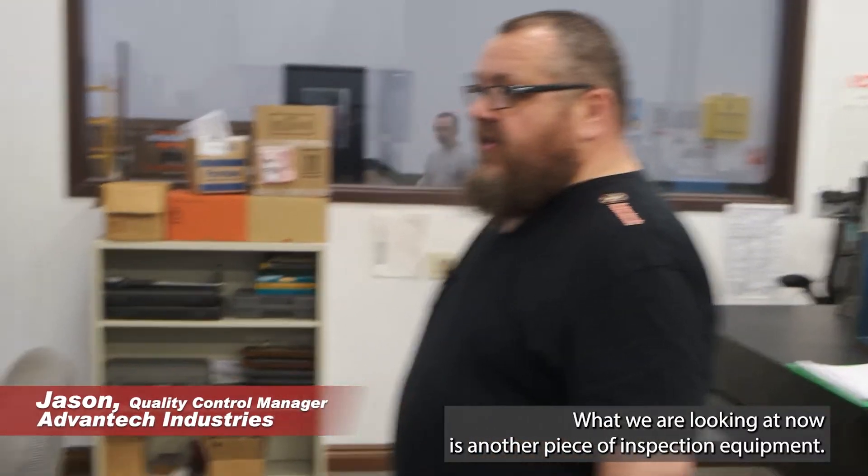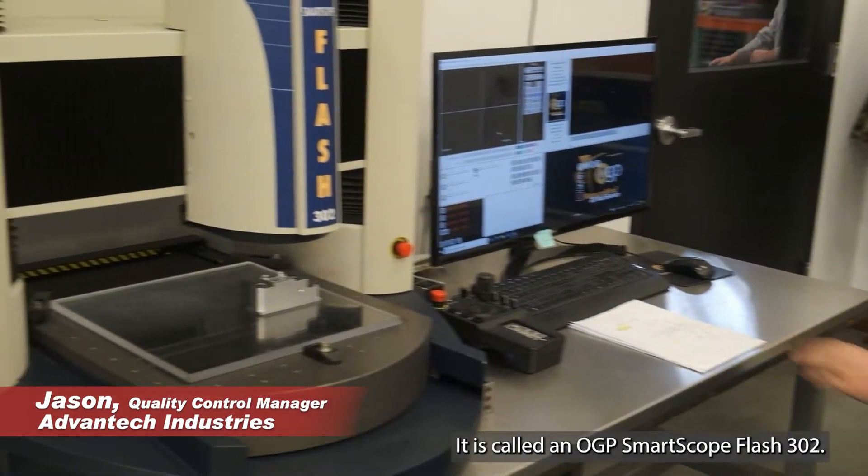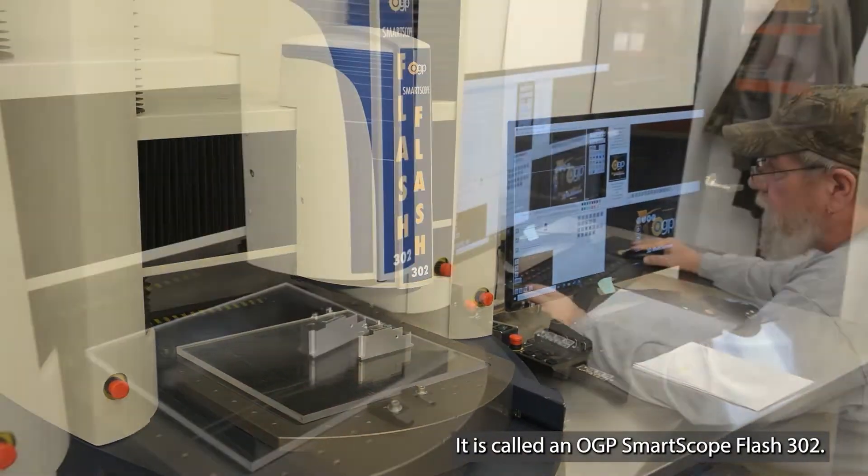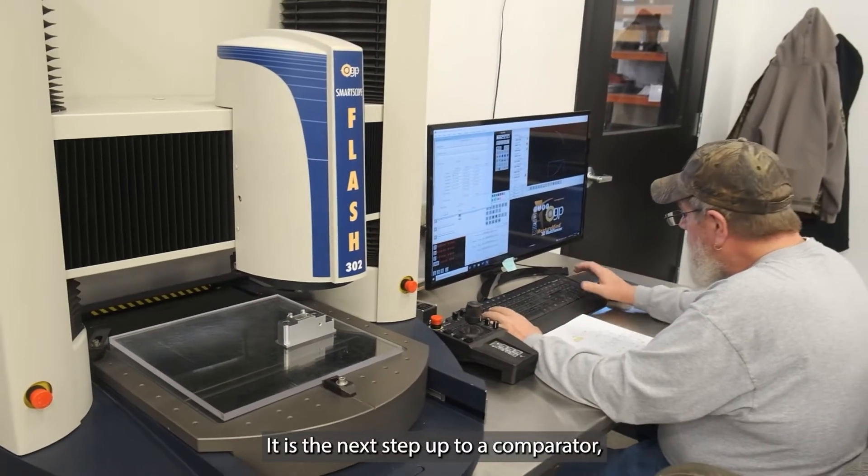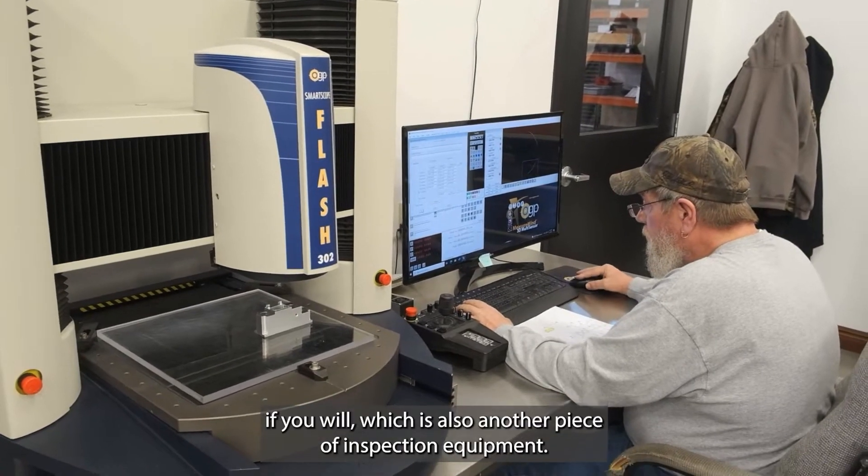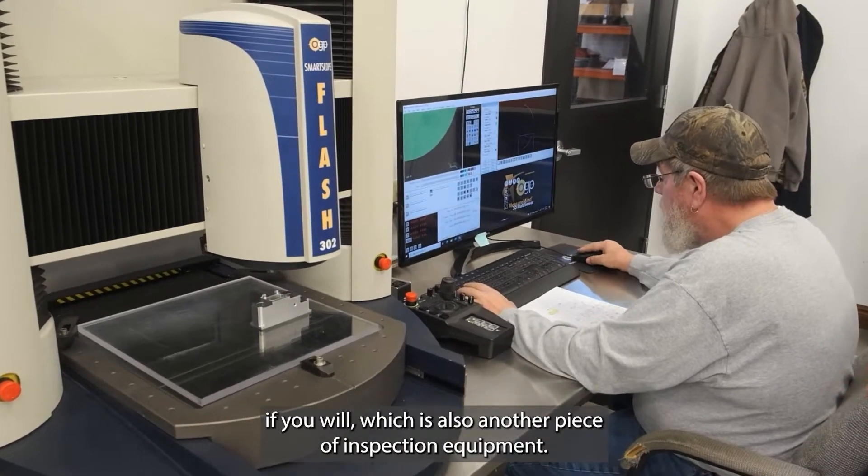What we are looking at now is another piece of inspection equipment. It is called an OGP SmartScope Flash 302. It is the next step up from a comparator, which is also another piece of inspection equipment.